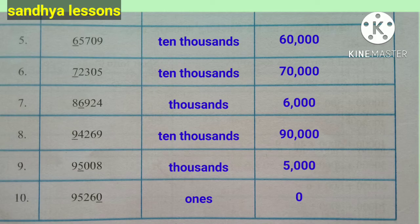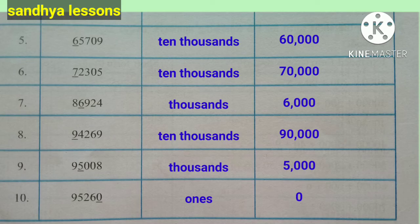65,709: underlined digit is 6; 6 is in the ten-thousands place, place value is 60,000. 72,305: underlined digit is 7; 7 is in the ten-thousands place, place value is 70,000. 86,924: underlined digit is 6; 6 is in the thousands place, place value is 6,000. 94,269: 9 is in the ten-thousands place, place value is 90,000. 95,008: 5 is in the thousands place, place value is 5,000. 95,260: underlined digit is 0; 0 is in the ones place, place value is 0.